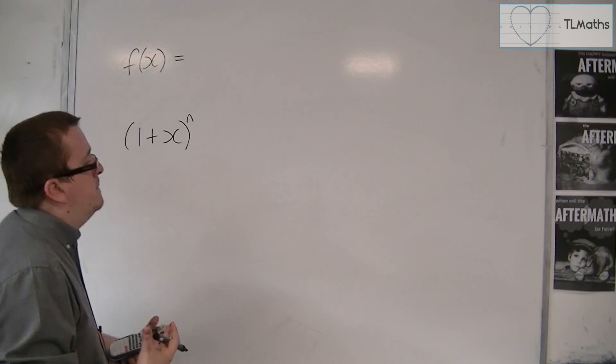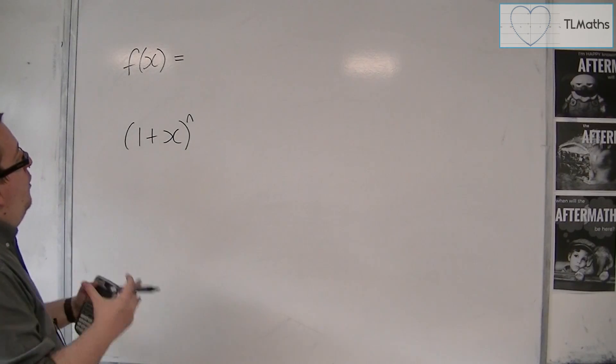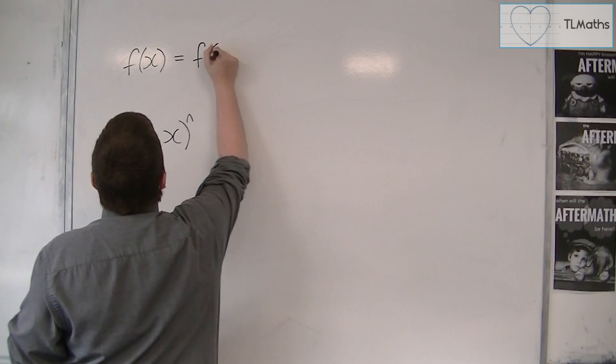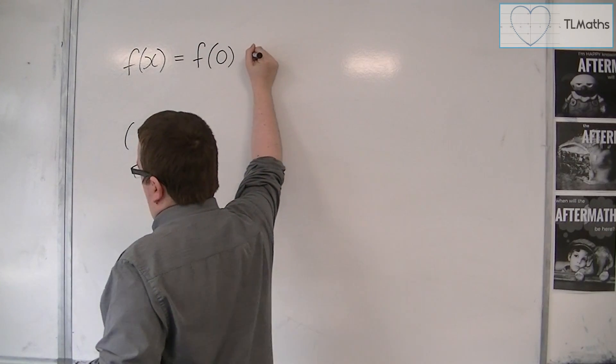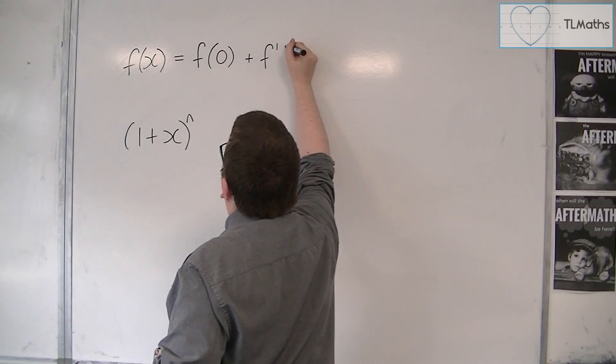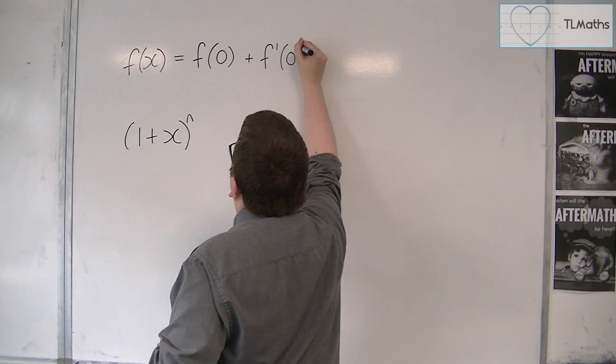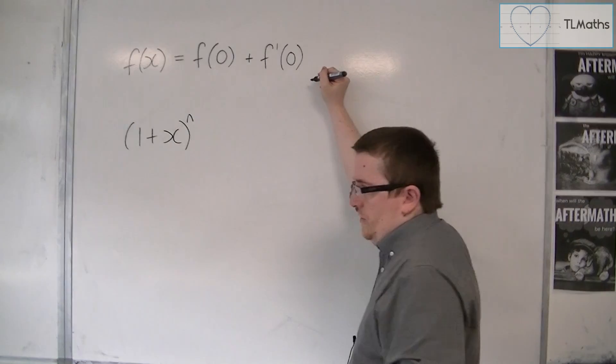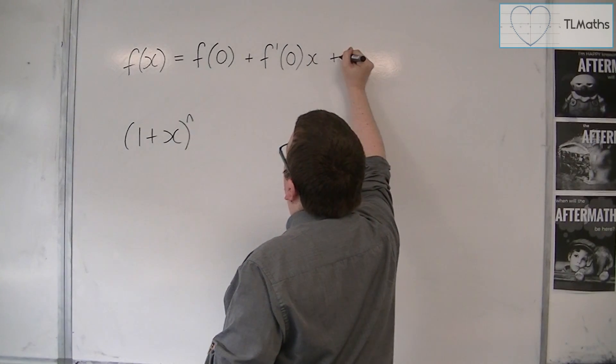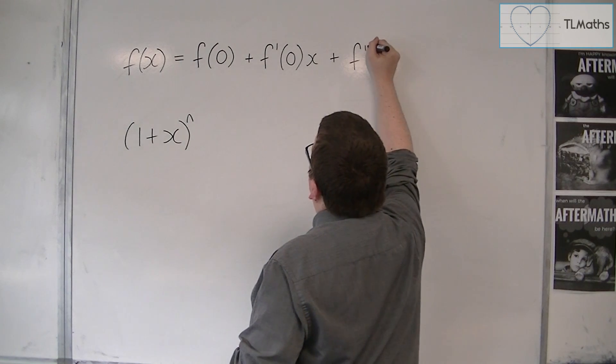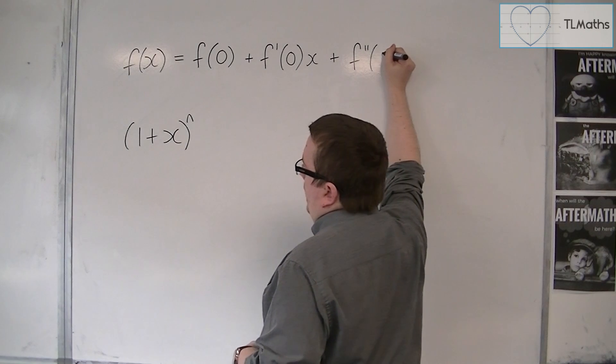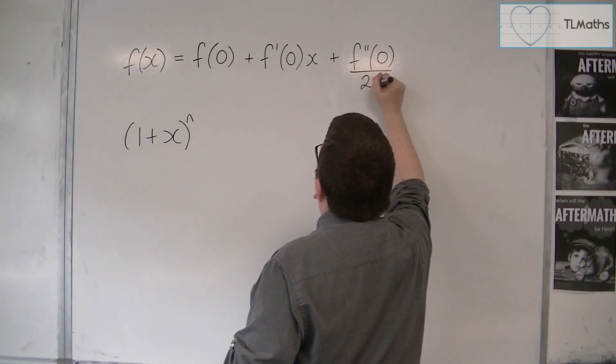So f of x is equal to f of 0 plus the first derivative of f with 0 substituted and so evaluated at 0 times x plus the second derivative of f evaluated at 0 divided by